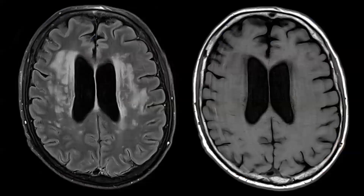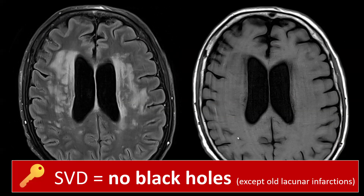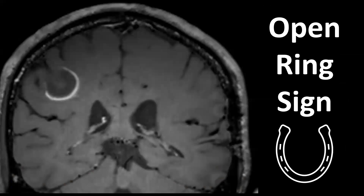Here we compare with a patient with classical microvascular white matter changes: on FLAIR images we see many white matter changes along the ventricles and in the deep white matter, but on T1-weighted images there are no black holes. So while you can have black holes from a few old lacunar infarctions, that will mostly be one or two — not many, and not located immediately along the ventricles.